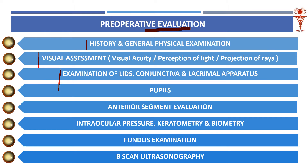Just as in corneal ulcer we first look at the lid margin, tear film, and adnexae before examining the cornea, similarly for cataract we have to first see the lids, conjunctiva, and lacrimal apparatus, and ascertain whether these have any infection or disease. Only then come to evaluation of the cataract. If the lids have a blepharitis or a sty, you have to delay cataract surgery because there is an infectious process nearby. Similarly, if there is a nasolacrimal duct obstruction with chronic dacryocystitis, you cannot proceed — you must first manage the dacryocystitis and then come for cataract surgery.